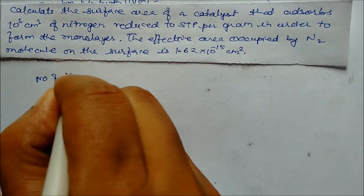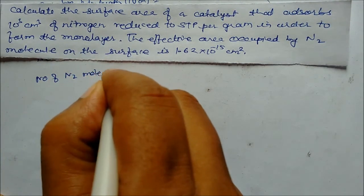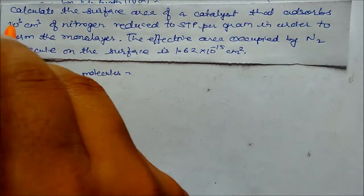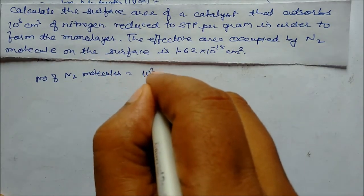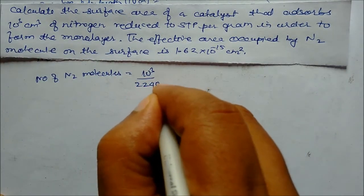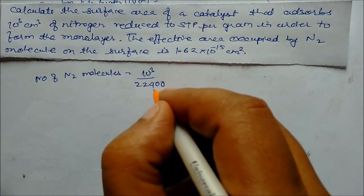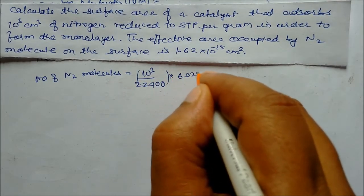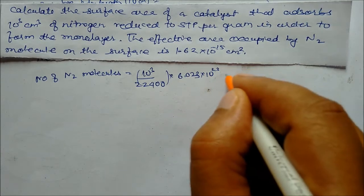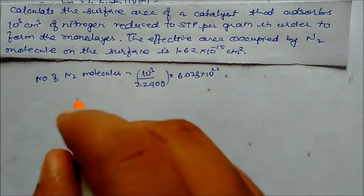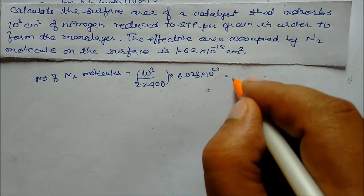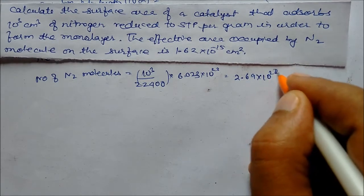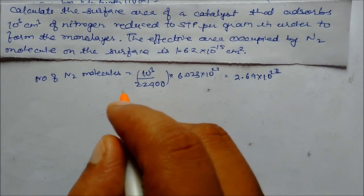Number of nitrogen molecules: volume adsorbed is 10³ cm³ at STP, so total number of molecules equals (volume / 22400) multiplied by Avogadro's number, 6.023 into 10²³. So we get 2.69 into 10²² as the total number of molecules.